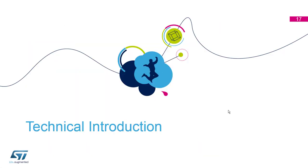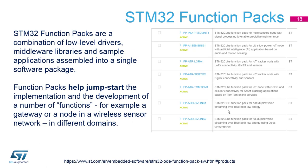Today we're going to talk about a function pack for AI called FPAI Sensing 1. There are several function packs available at ST to get you started building applications — for IoT cloud, predictive maintenance, or LoRa — but we'll be focusing on FPAI Sensing 1. This function pack has two example neural network implementations in it.